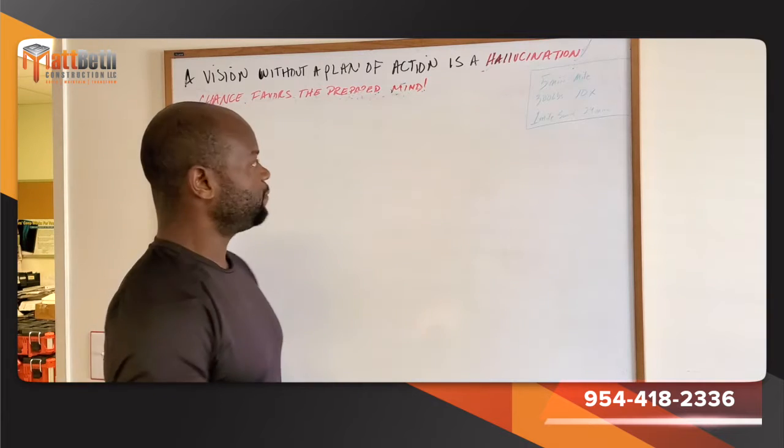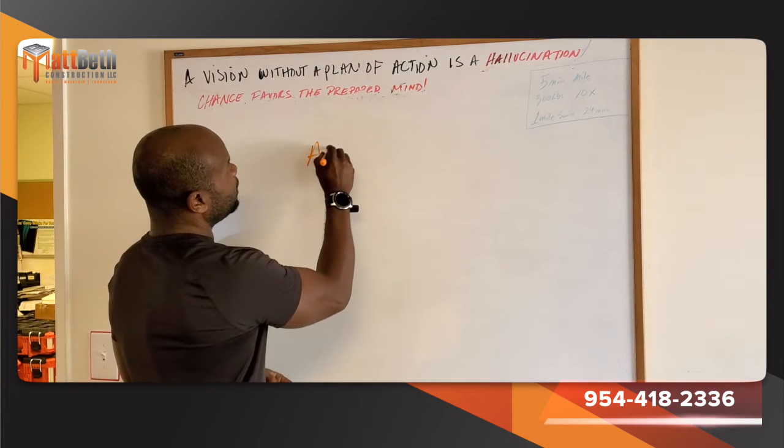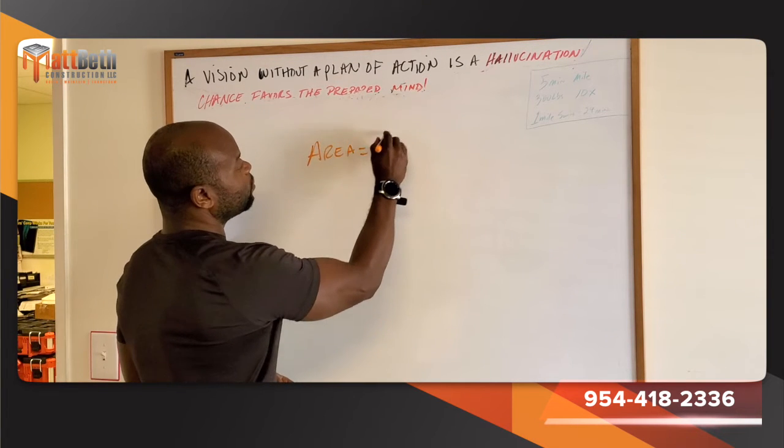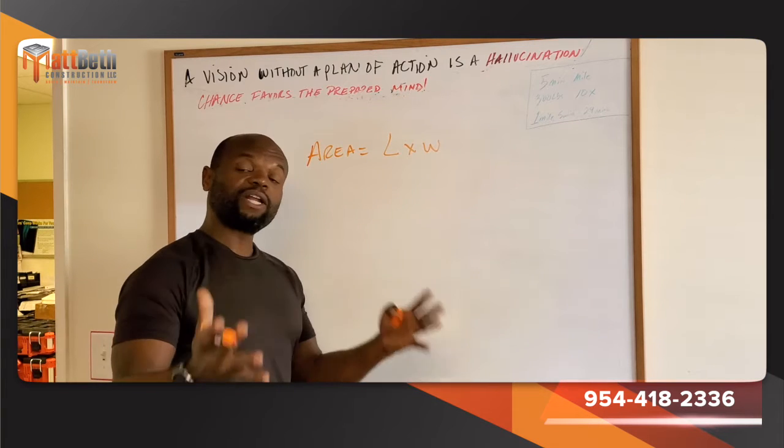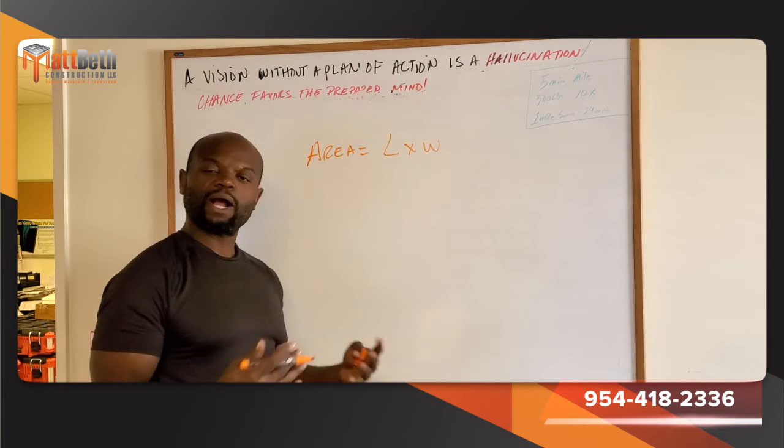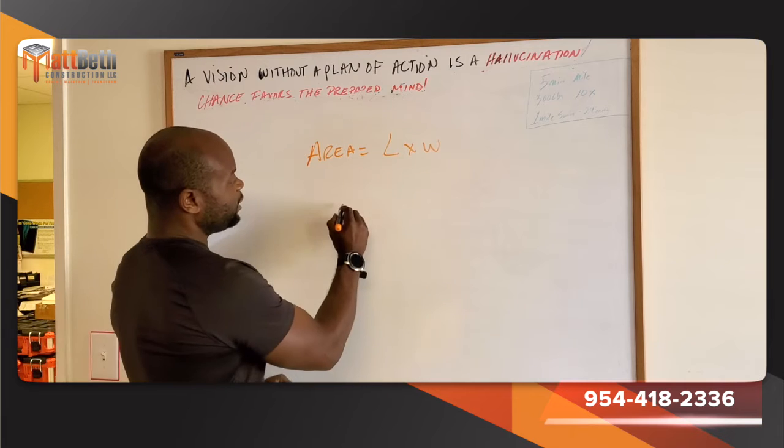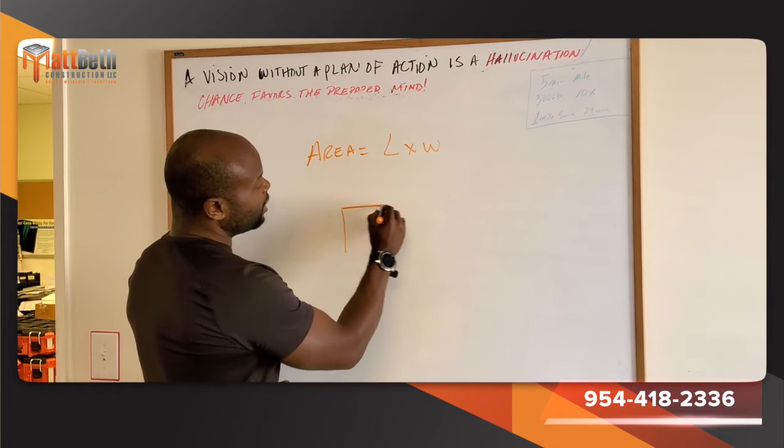First, the easiest formula we all know, and that's area. Area equals length times width. What that means on a set of plans, if you're a drywaller, a finisher, or whatever, and you have a piece of drywall.